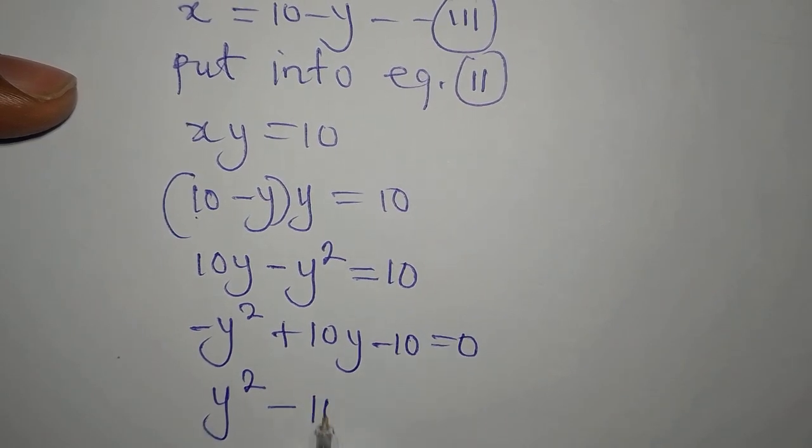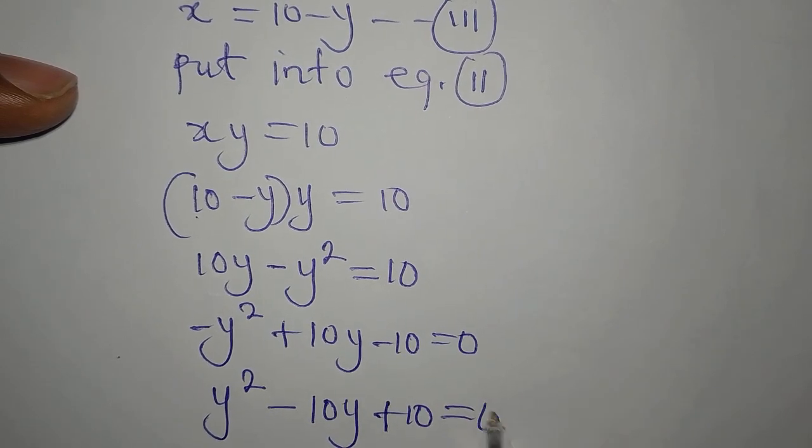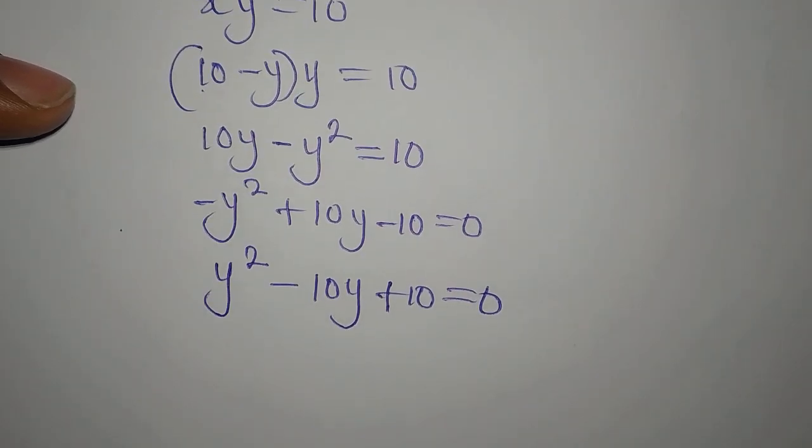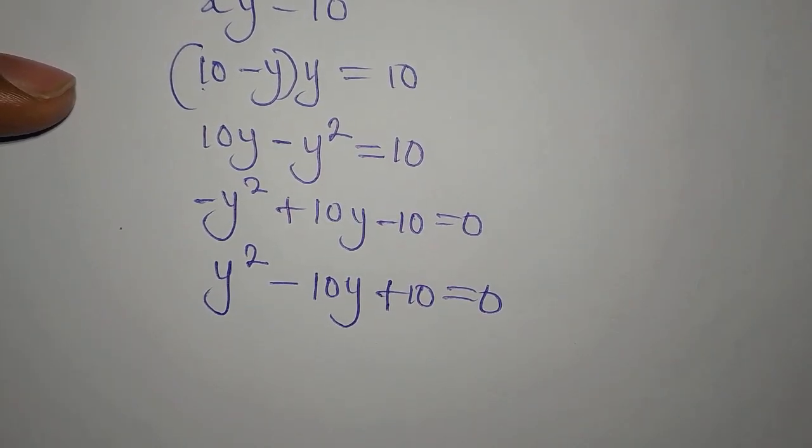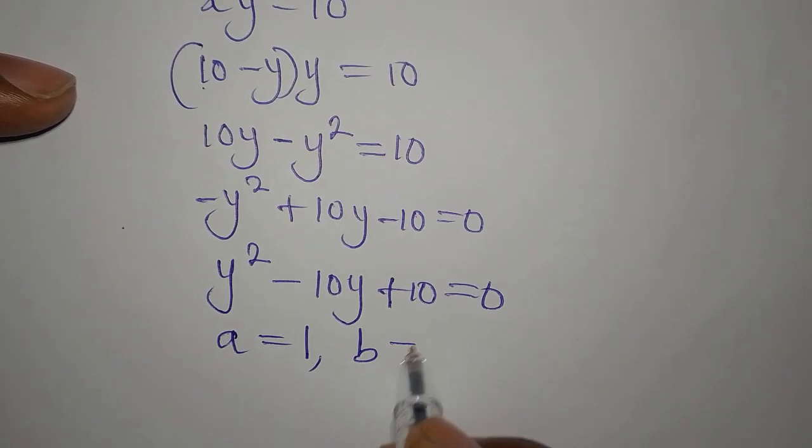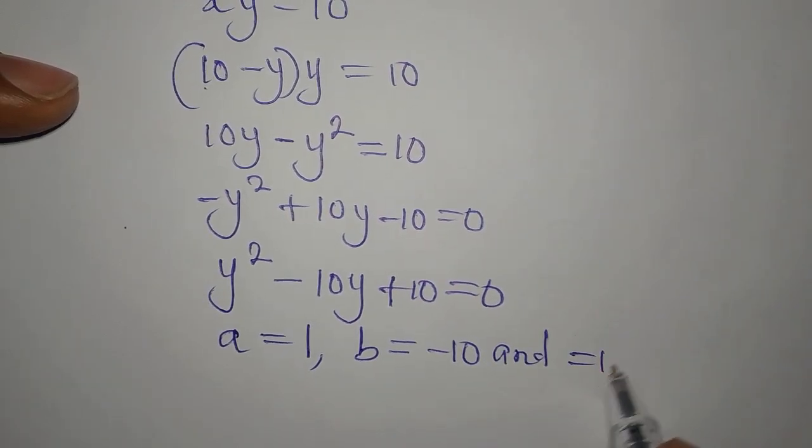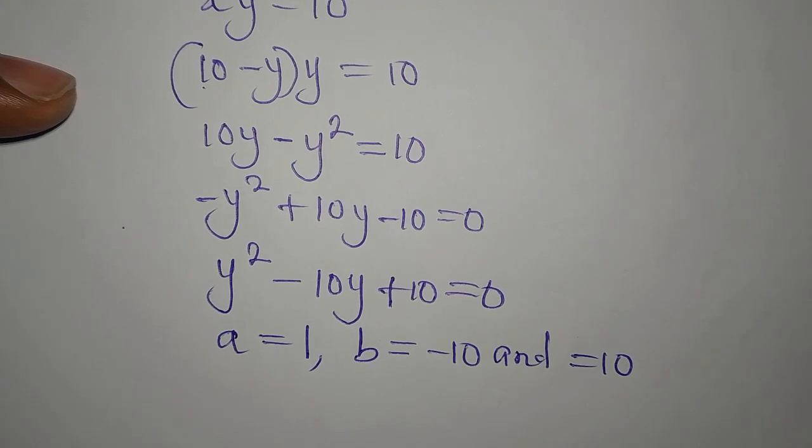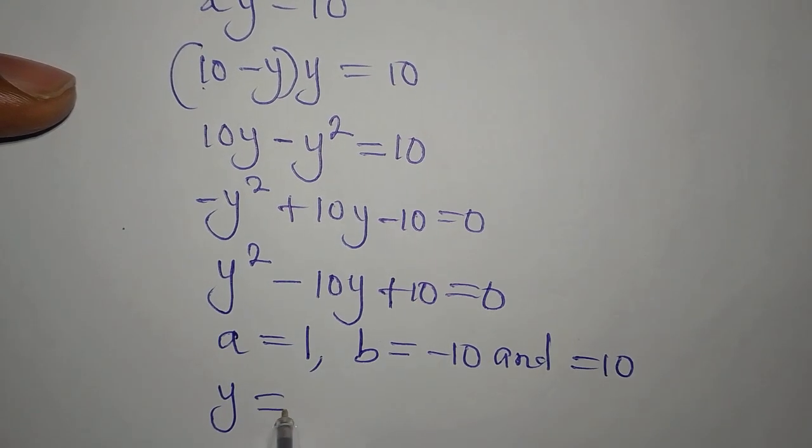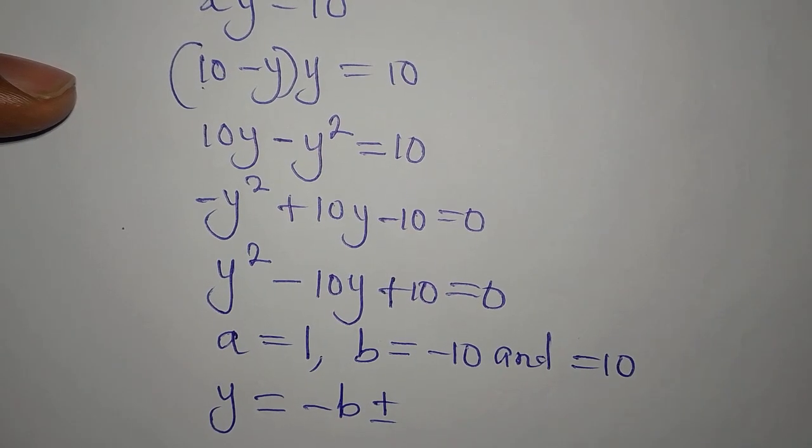We need to remove this negative, so we're going to have positive y squared. That will turn this sign here to become minus 10y, this becomes plus 10, and then we equate to zero. Now we have a quadratic equation, and this equation has a to be 1, b to be minus 10, and c to be plus 10. Now the formula we're going to use is the quadratic formula for this.